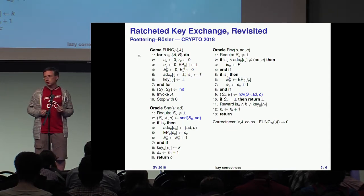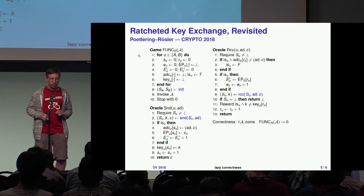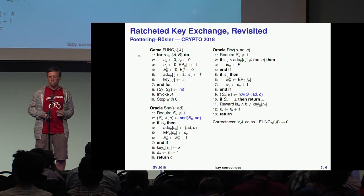The correctness definition says a ratcheted key exchange is described by several algorithms: initialization, sending, and receiving. Correctness says that for every adversary, this game should return zero all the time.